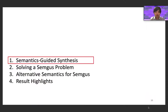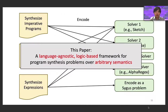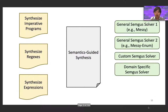Our answer to this problem is the Semantics-Guided Synthesis framework, shortened as the SemGUS framework, where the aim is to be a language-agnostic, logic-based framework for specifying program synthesis problems that can possibly be defined over arbitrary semantics. SemGUS aims to be a format in which you can easily express various different synthesis problems containing different semantics depending on the problem you're trying to express. One intuitive way to think about the SemGUS framework is as an intermediate representation for program synthesis problems.